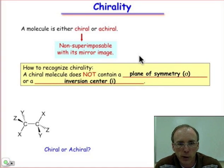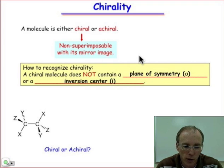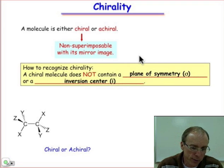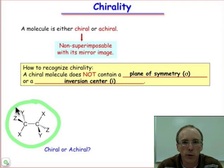Chirality is a stereochemical property of an object, and for us, the object of interest is the structure of a molecule. We could ask the question: is this molecule chiral or achiral?